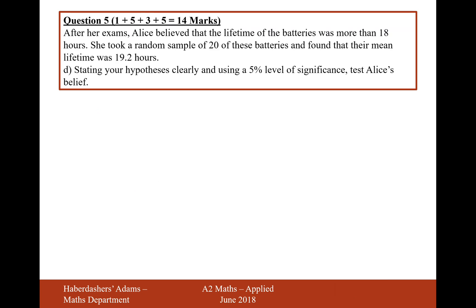Moving on to part D. After her exams, Alice believed that the lifetime of her batteries was more than 18 hours. She took a random sample of 20 batteries and found a mean lifetime of 19.2 hours. Stating our hypotheses clearly and using a 5% significance level, we test Alice's belief. H₀: μ = 18. H₁: μ > 18 — not equals 19.2, but more than 18. The test significance level is 5% or 0.05. We're looking for a probability less than 0.05 to reject the null hypothesis.